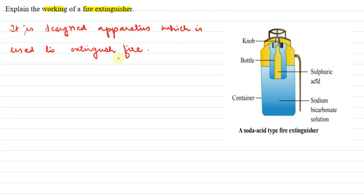That means if there is a fire, the fire extinguisher works to extinguish that fire. And this outer cylinder is made up of metal case. This is the inner cylinder and this inner cylinder is made up of glass.